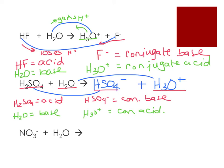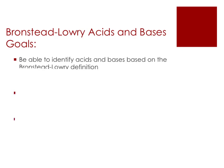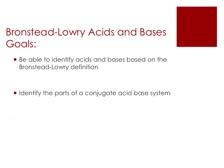The last example is one that's going to show up on the questions associated with this video, so you might pause and try to do it now or save it for later. That concludes this video. To review our goals: we learned how to identify acids and bases based on the Brønsted-Lowry definition, how to identify the parts of a conjugate acid-base system, and how to predict products of a Brønsted-Lowry acid-base equation.